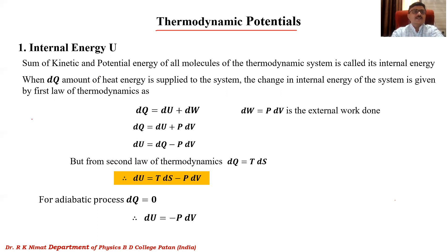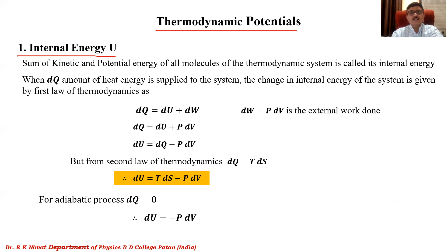Let us consider the first thermodynamic potential, which is internal energy. We know that internal energy consists of two parts: kinetic energy due to the motion of the molecules, and potential energy if there exist intermolecular forces of attraction. In the case of an ideal gas, internal energy is only kinetic energy. But for a real gas described by the Van der Waals equation, intermolecular forces exist and must be accounted for.